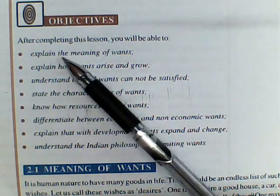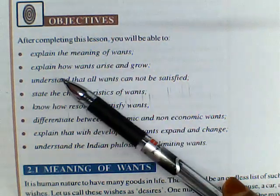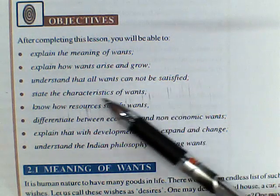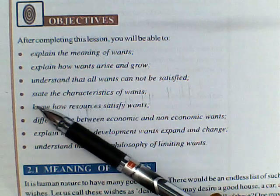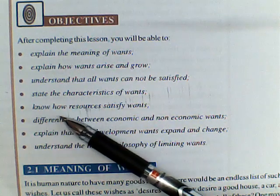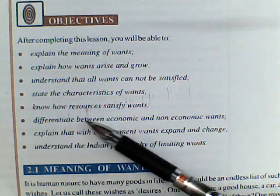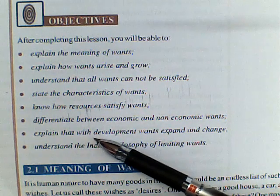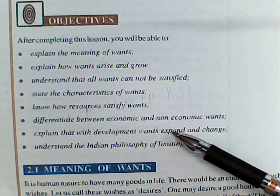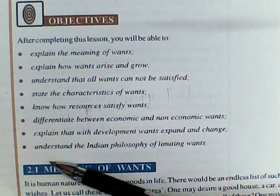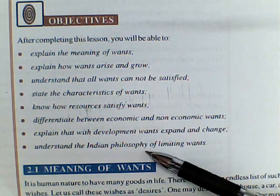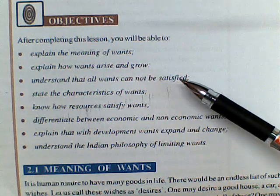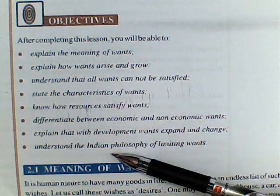After completing this lesson, we will be able to explain the meaning of wants, explain how wants arise and grow, understand that all wants cannot be satisfied, state the characteristics of wants, know how resources satisfy wants, differentiate between economic and non-economic wants, explain that with development wants expand and change, and understand the Indian philosophy of limiting wants.